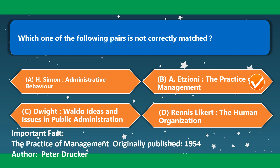Which one of the following pairs is not correctly matched? H.A. Simon — Administrative Behavior — correct. Dwight Waldo — Ideas and Issues in Public Administration — correct. Rensis Likert — The Human Organization — correct. A. Etzioni — The Practice of Management — not correct. So the correct option is option B. 'The Practice of Management,' originally published in 1954, was authored by Peter Drucker.